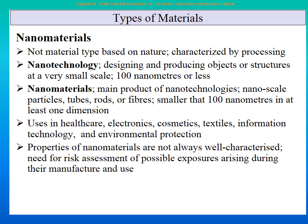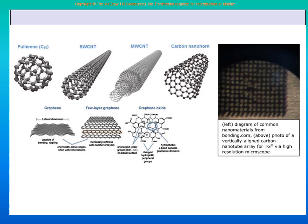Here we are showing you nano technology shapes. One is like a football — a ball-shaped arrangement of nano-size particles — called a fullerene. Another shape is a long tube called a nano tube, and CNT stands for carbon nano tube.